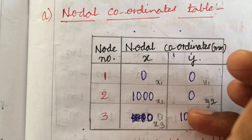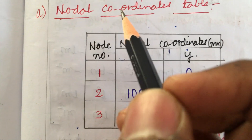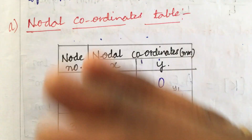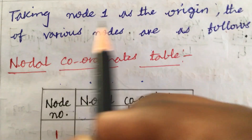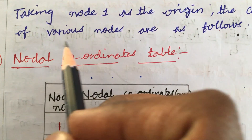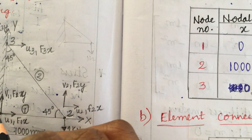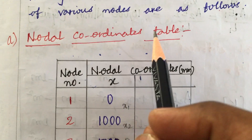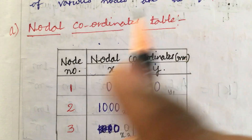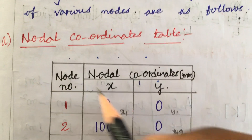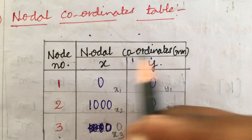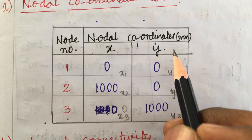Now, taking node 1 as the origin, the coordinates of various nodes are as follows. We need to work out the nodal coordinate table first. We have already done the discretization. The nodal coordinate table lists nodes along the vertical and nodal coordinates x and y along the horizontal.